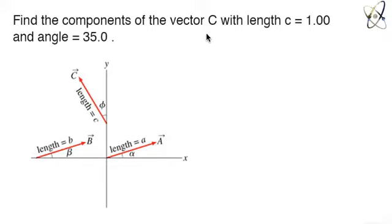So here we have to find the components of the vector C with length 1 and angle theta is 35.